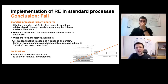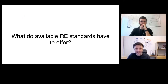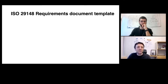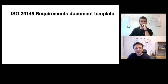If software process models don't give us proper answers, what do requirements engineering standards have to say? Requirements engineering standards — there are quite a few available — focus on the artifacts. One such example is the ISO standard 29148, provided by the International Standardization Organization, which defines requirements document templates in the form of three different artifacts: a stakeholder specification, a system requirement specification, and a software requirement specification.